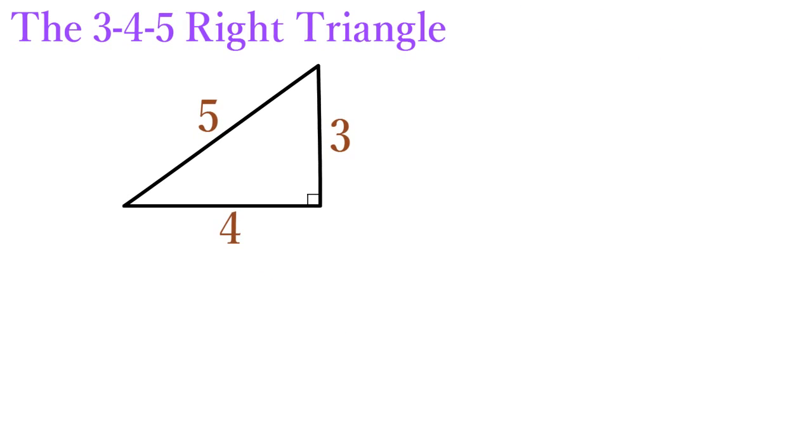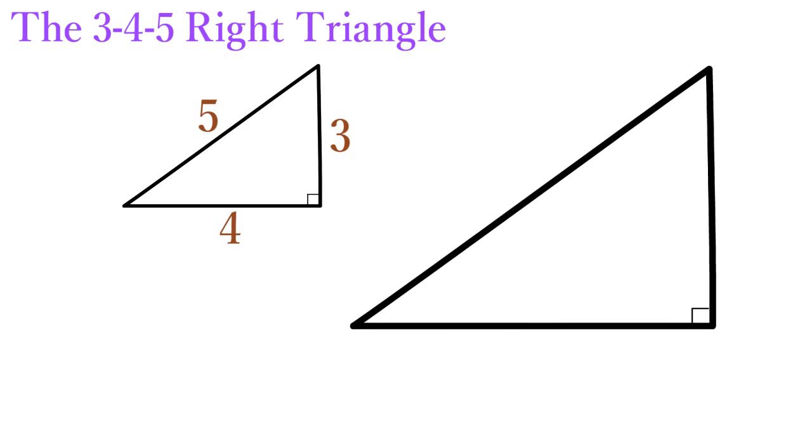If you double the size of this triangle, the result is a similar right triangle whose three corresponding sides are exactly twice as long. This triangle has two legs of lengths 6 and 8, and a hypotenuse of length 10.